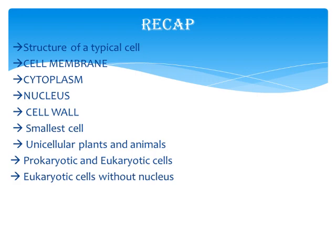We discussed the different structures of a typical cell. We divided it into three parts: the cell membrane, the cytoplasm, and the nucleus. About cell membrane: it is also known as the plasma membrane and it forms the outer covering of each cell. That is the minimum we need to know about cell membrane.